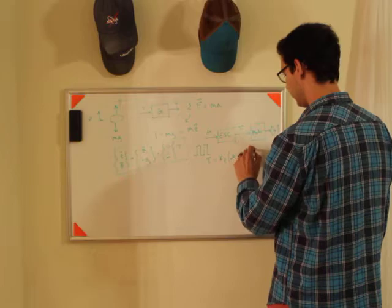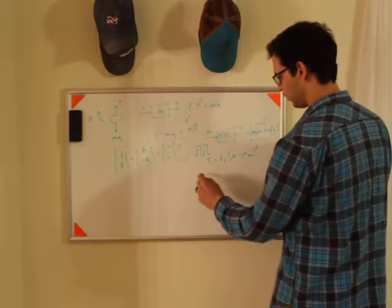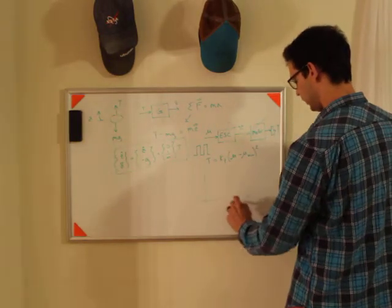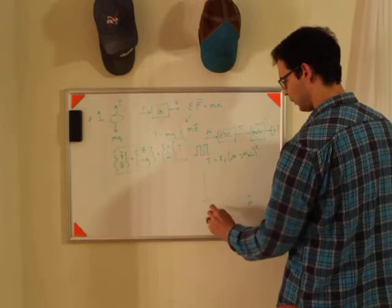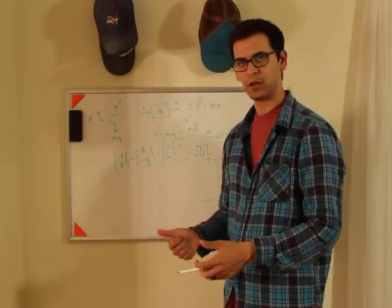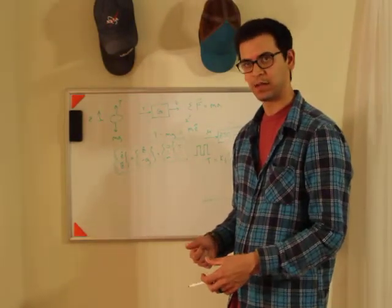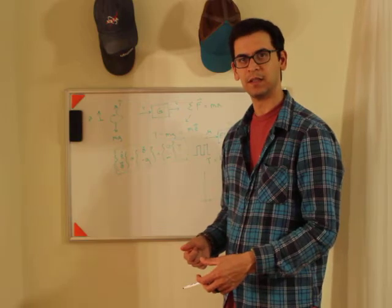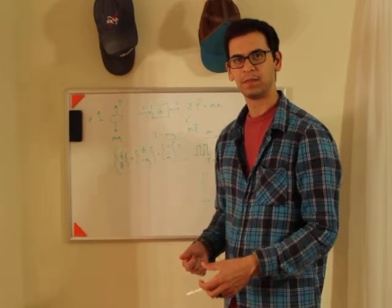Now you can make this as simple as possible and just say that T is just equal to some thrust coefficient kT, and that you get from a bunch of different data sheets, times the microsecond signal minus mu min squared. So if you plot the microsecond signal input...